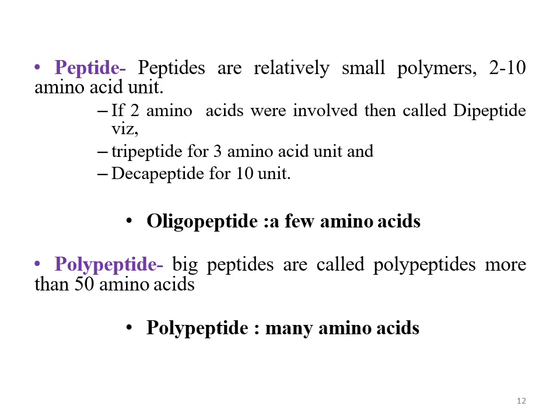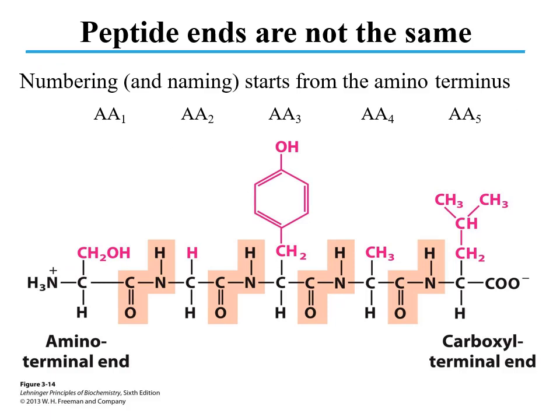Peptides are relatively small polymers of up to two to ten amino acid units. If two amino acids are involved, the product will be a dipeptide. If another amino acid is added to a dipeptide, it will be a tripeptide. By the addition of another amino acid to a tripeptide, it will be a tetrapeptide, and so forth up to a decapeptide of ten amino acid units. Oligopeptide is a term used for a few amino acids. Polypeptides are the large peptides with more than 50 amino acids in one polypeptide chain — poly means many.